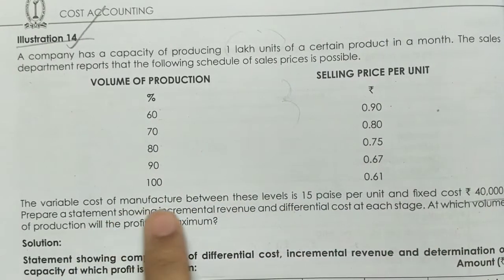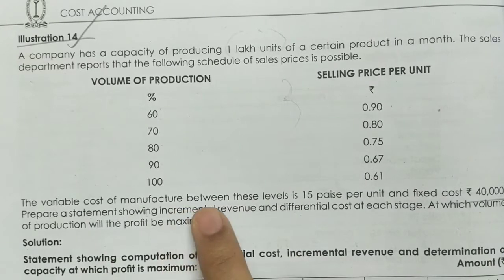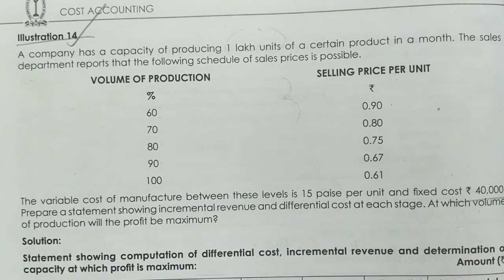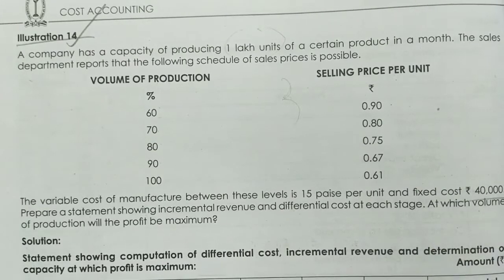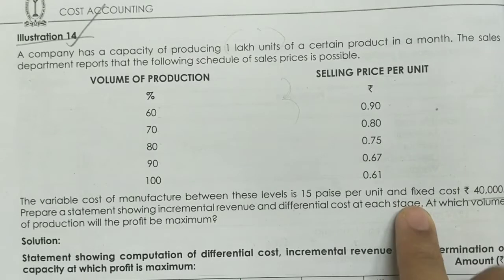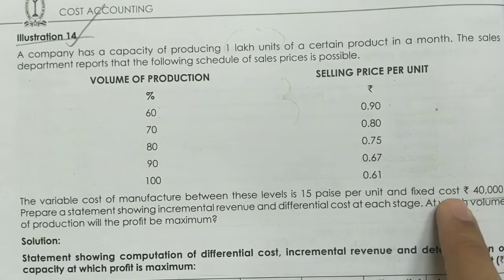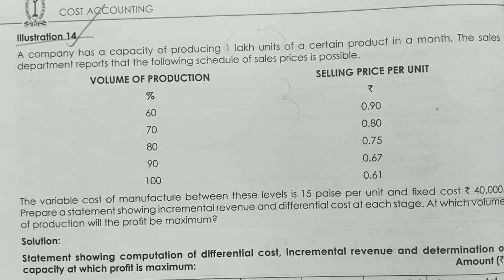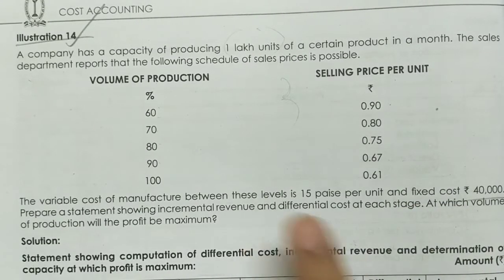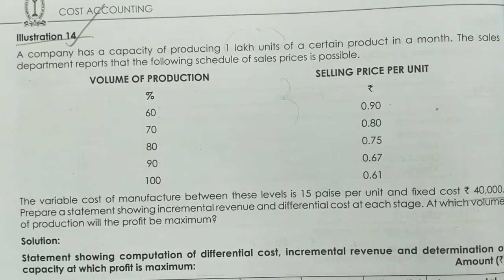The variable cost of the manufacturer is 50 paise per unit. The fixed cost of the manufacturer is 50 paise per unit. Prepare a statement showing incremental revenue or differential cost of each stage.